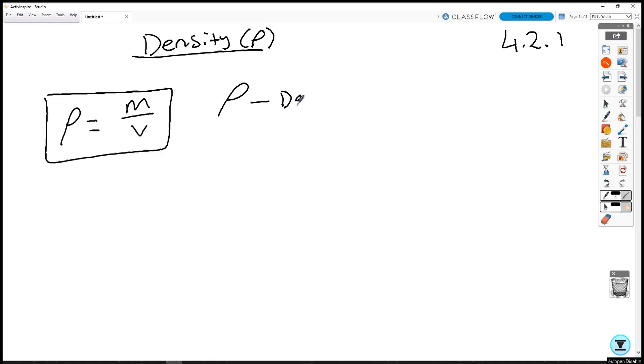Where rho is density, measured in kilograms per meter cubed. M is the mass, measured in kilograms. V is volume, measured in meters cubed.